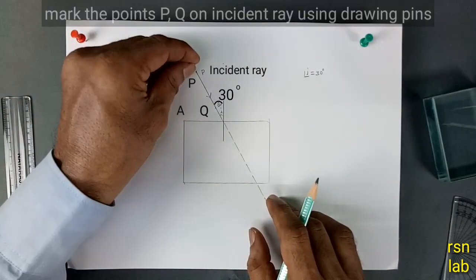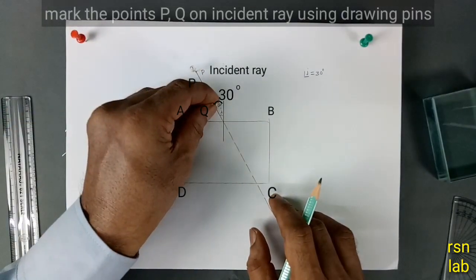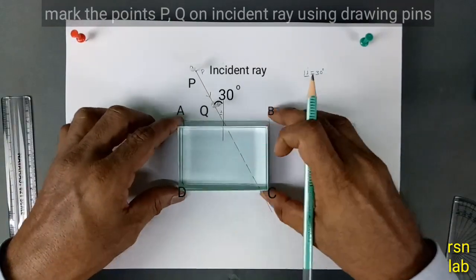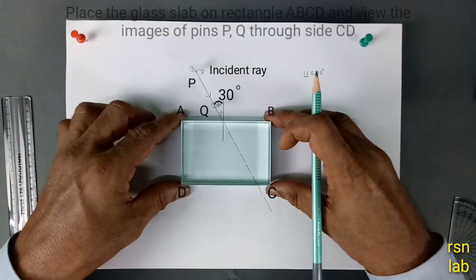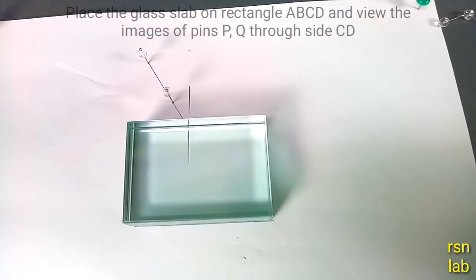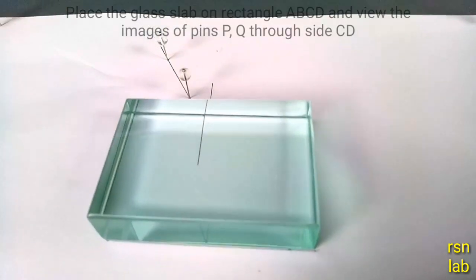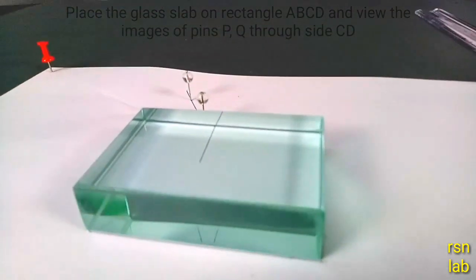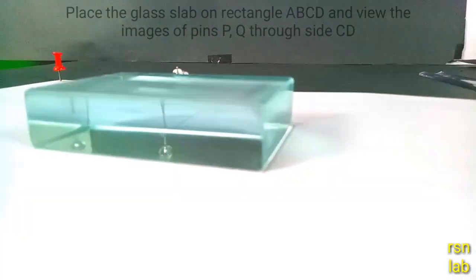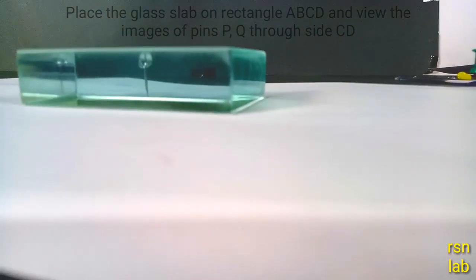Mark the points P, Q on the incident ray using drawing pins. Place the glass slab on rectangle ABCD and view the images of pins P, Q through side CD. And now you can see clearly the two pins are at the same line.